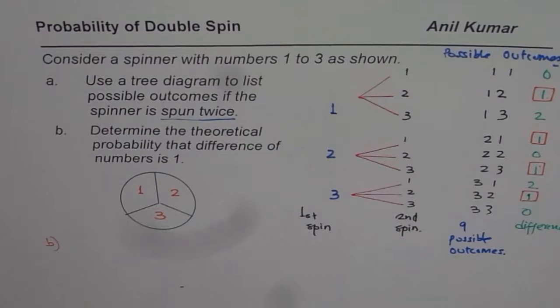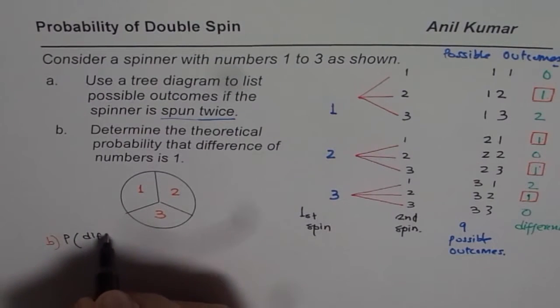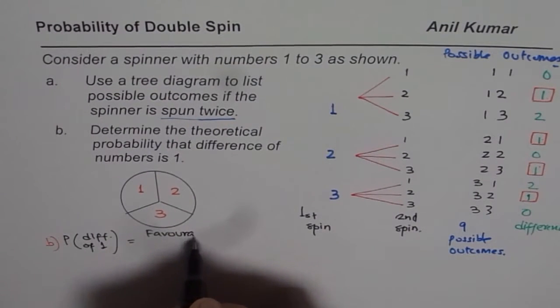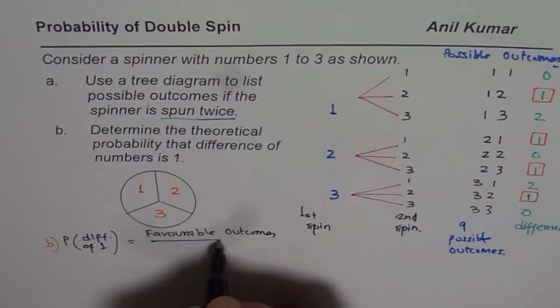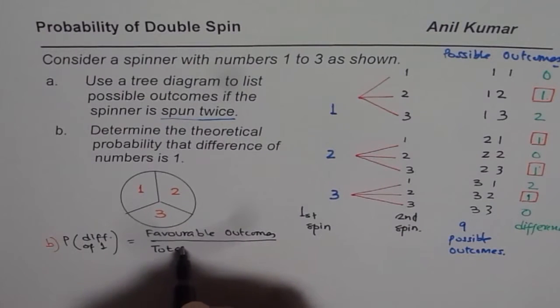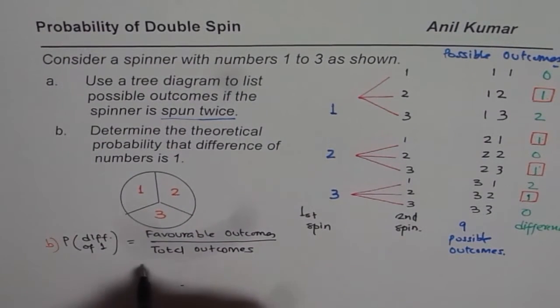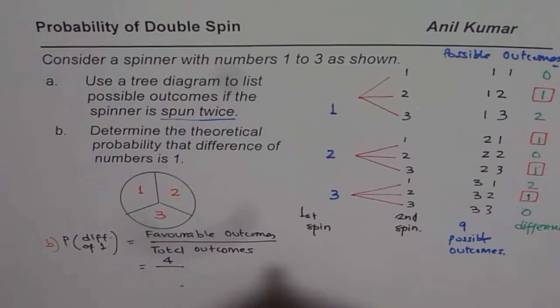So for part B, our answer will be, favorable outcomes, so probability for getting difference of 1. So there will be favorable outcomes over total outcomes. So in our case, favorable outcomes are 1, 2, 3, 4. So it is 4 out of total of 9. So 4 out of 9.